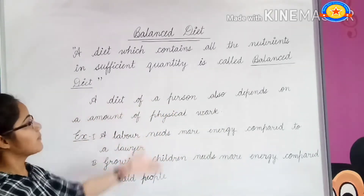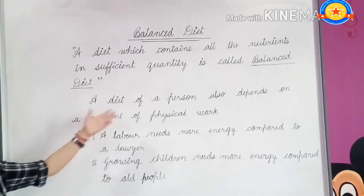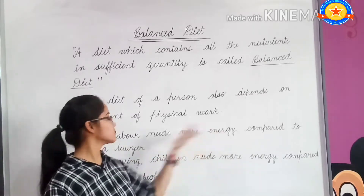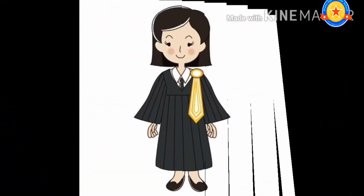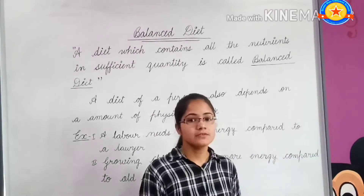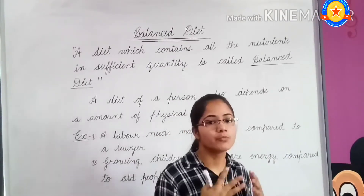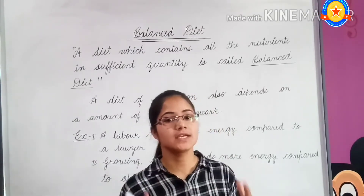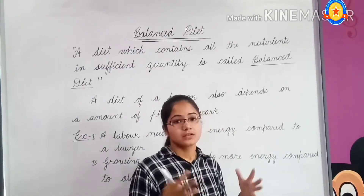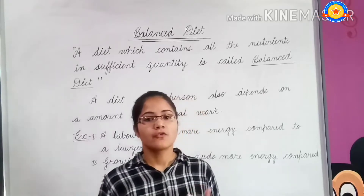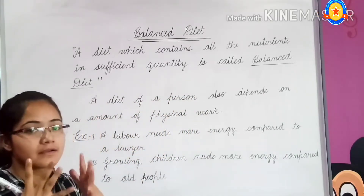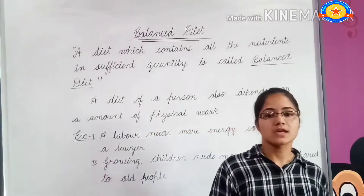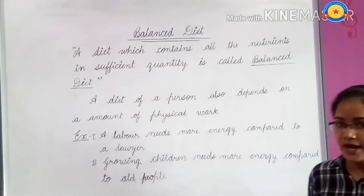A person's diet also depends on the amount of physical work. For example, a labor worker needs more energy compared to a lawyer. A construction worker obviously does more physical work than a lawyer, so he needs more energy. His balanced diet should contain a greater amount of energy-giving substances such as carbohydrates and fat.